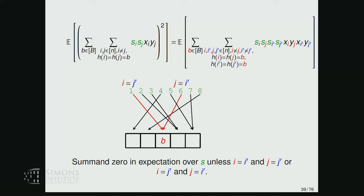We have four-wise independent random signs. We note that if the sets {I,J} and {I',J'} overlap by exactly one element, then the remaining elements are unmatched and the corresponding term is zero in expectation.